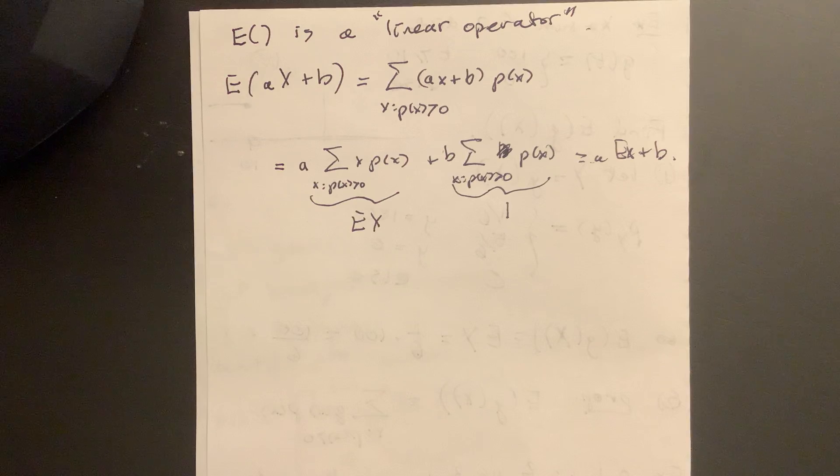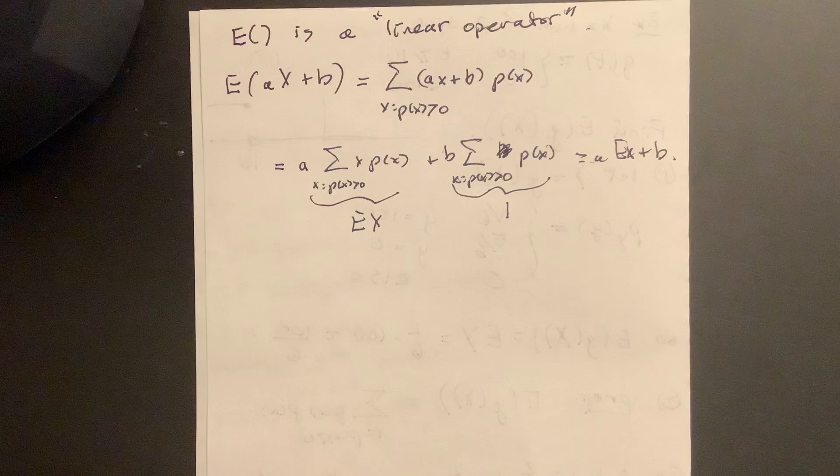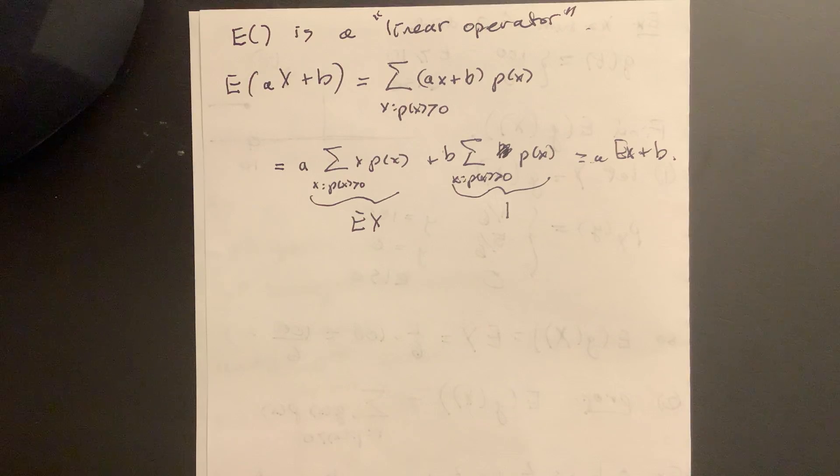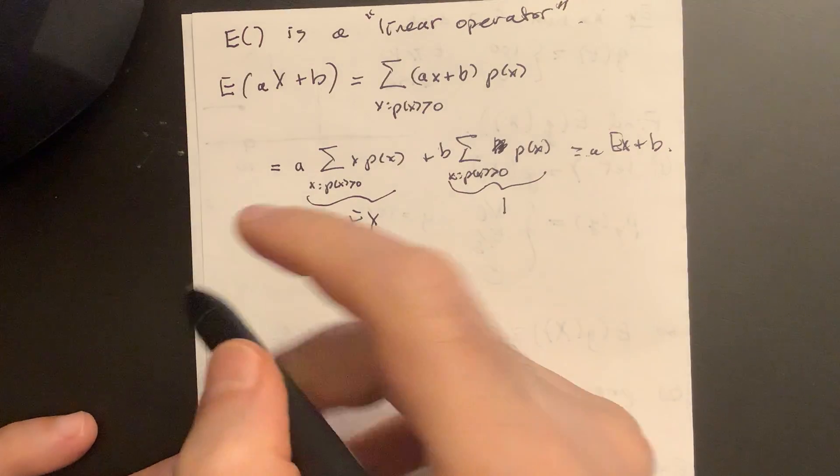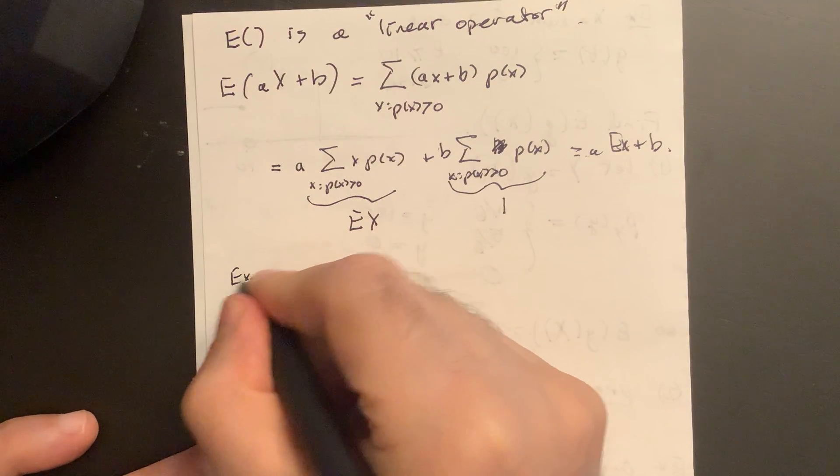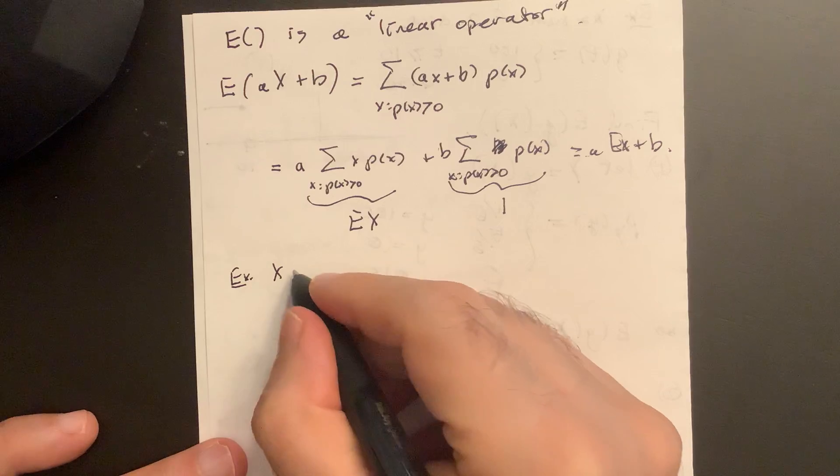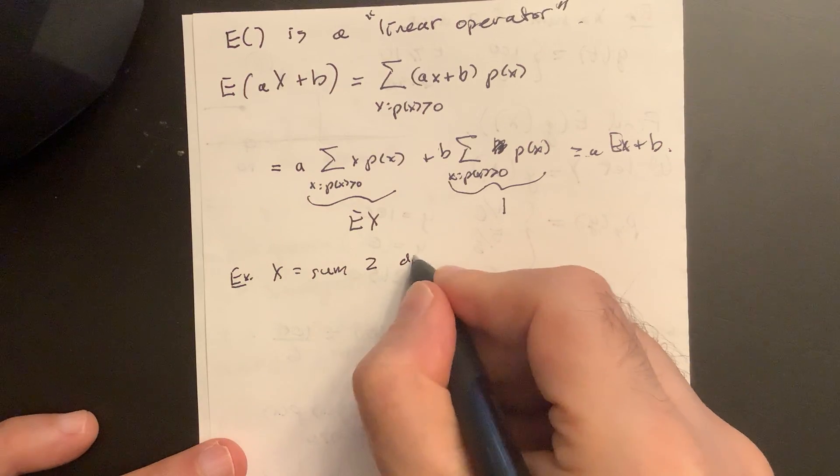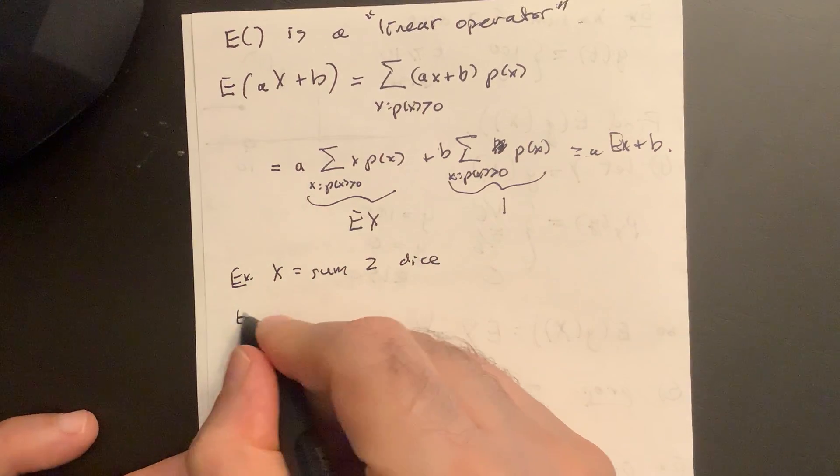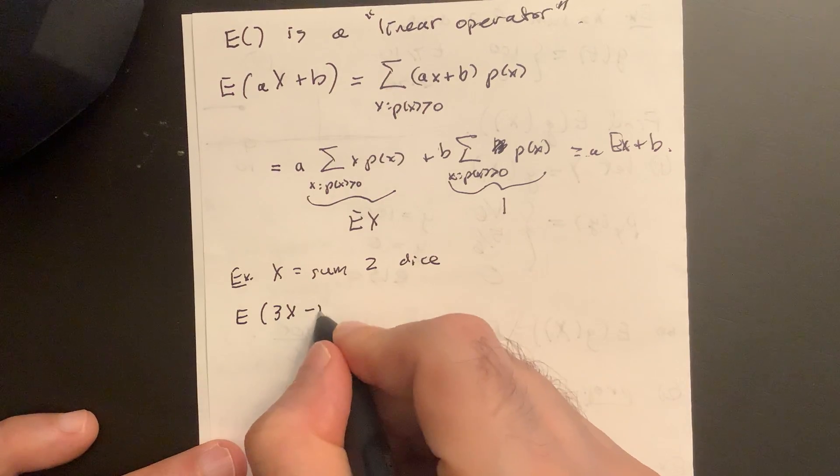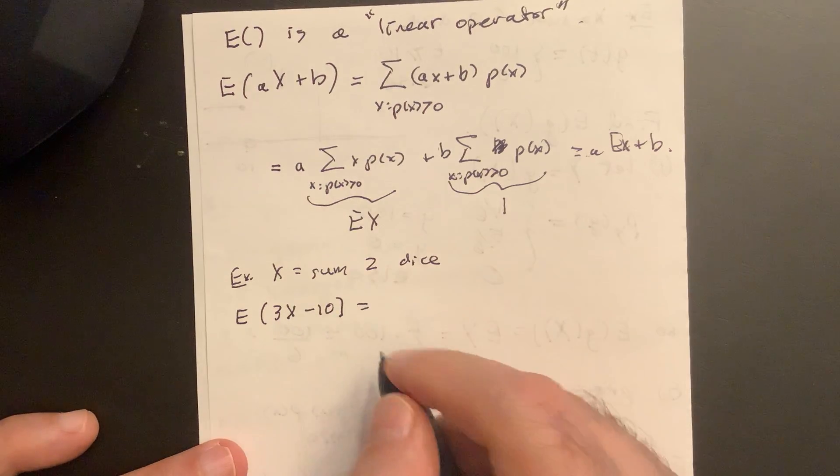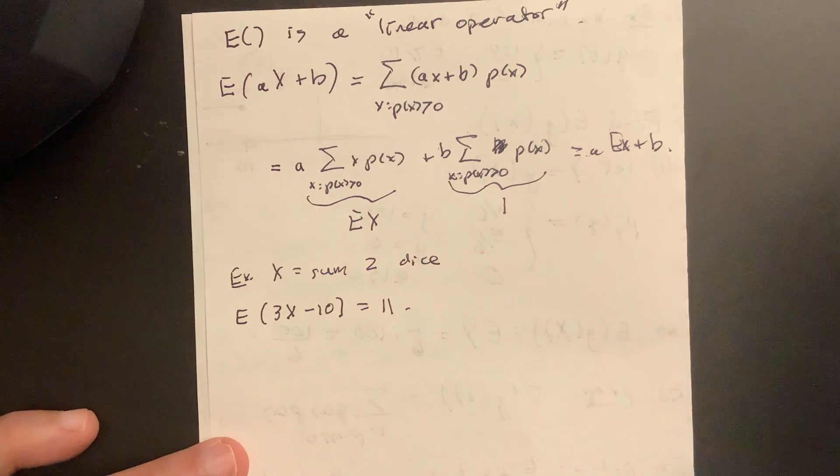Okay. That can be handy, right? So you can now, if you know, say x is the sum of two dice, and I want the expected value of 3x minus 10, you get 11, right? So example.